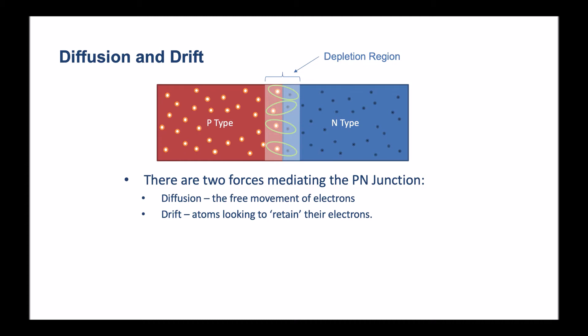We've already mentioned the topic of diffusion. The diffusion being the vibrating or free movement of electrons. There's another force at play in the p-n junction and this is what we call drift. Drift is the effect of atoms looking to retain their electrons or prevent diffusion.